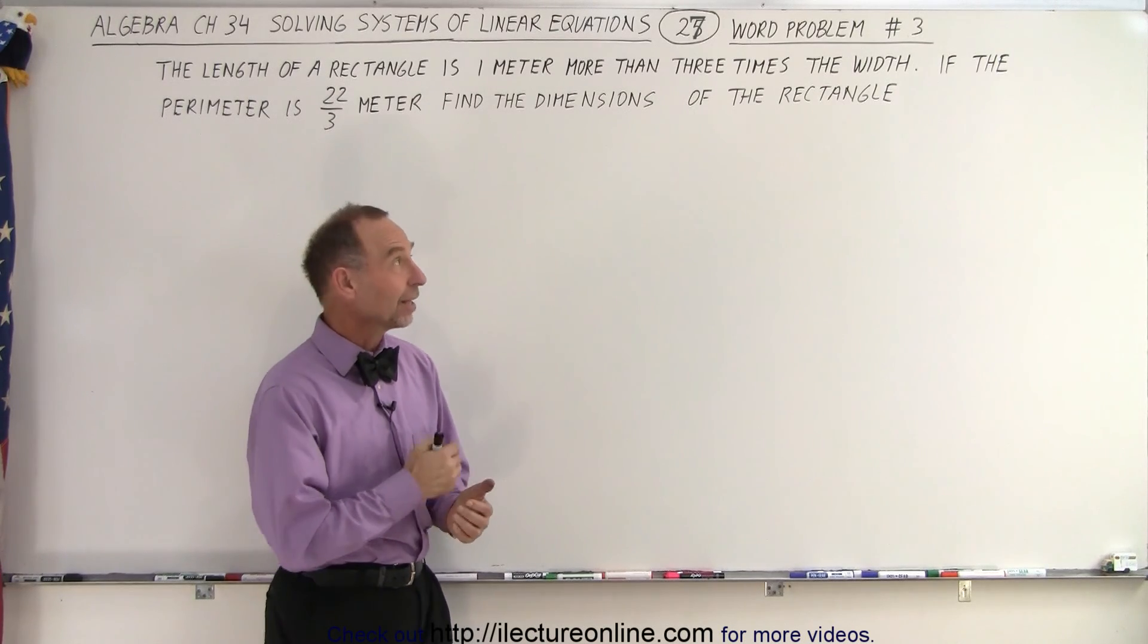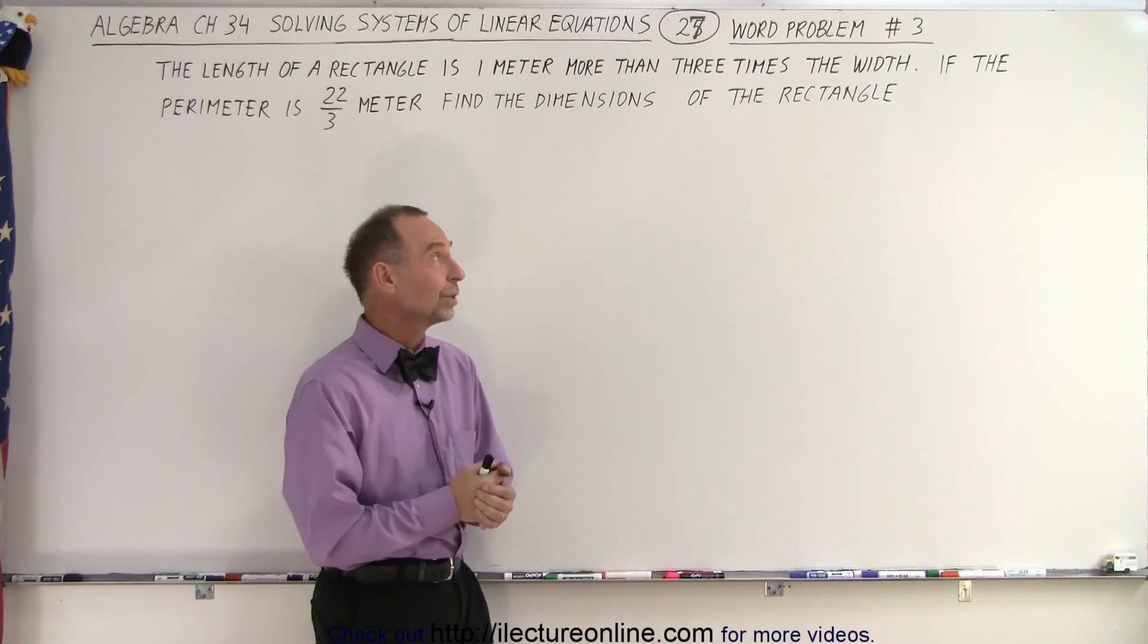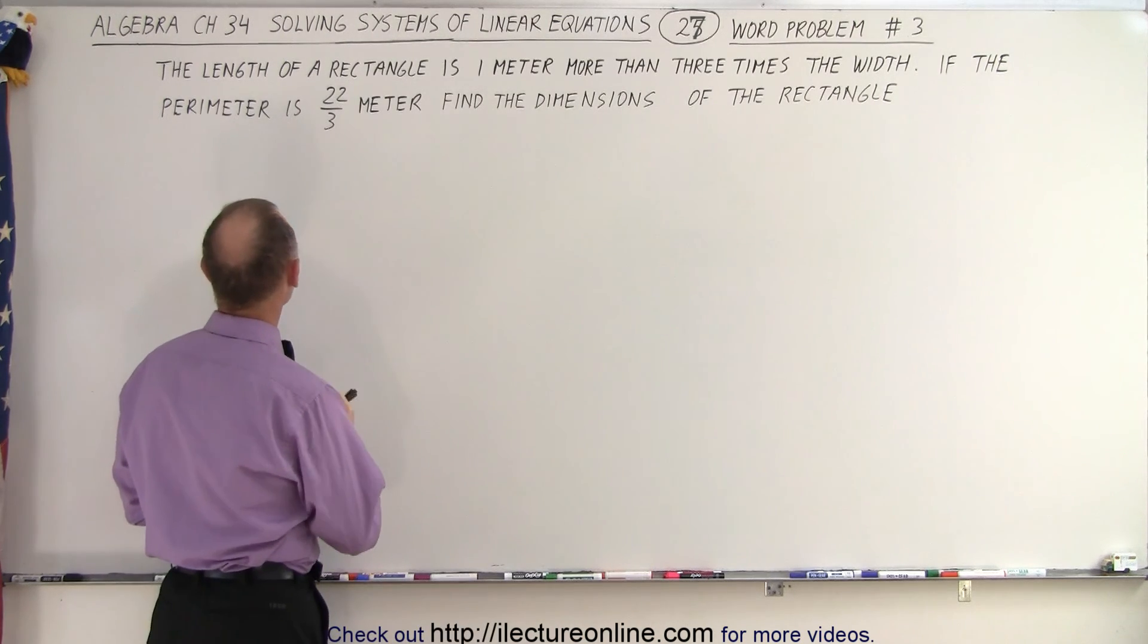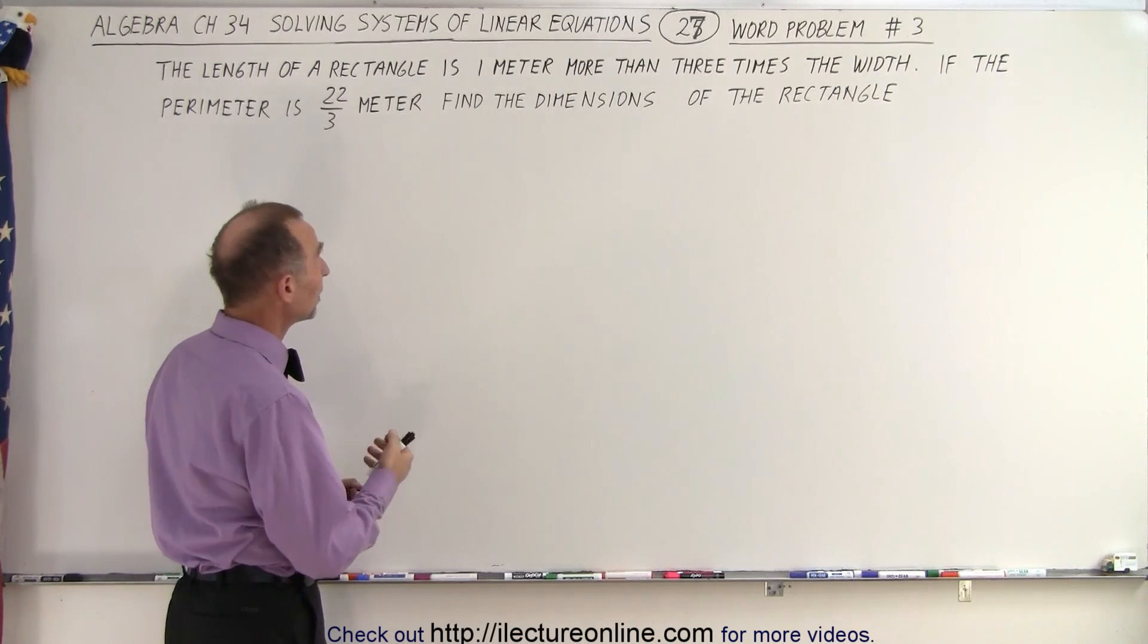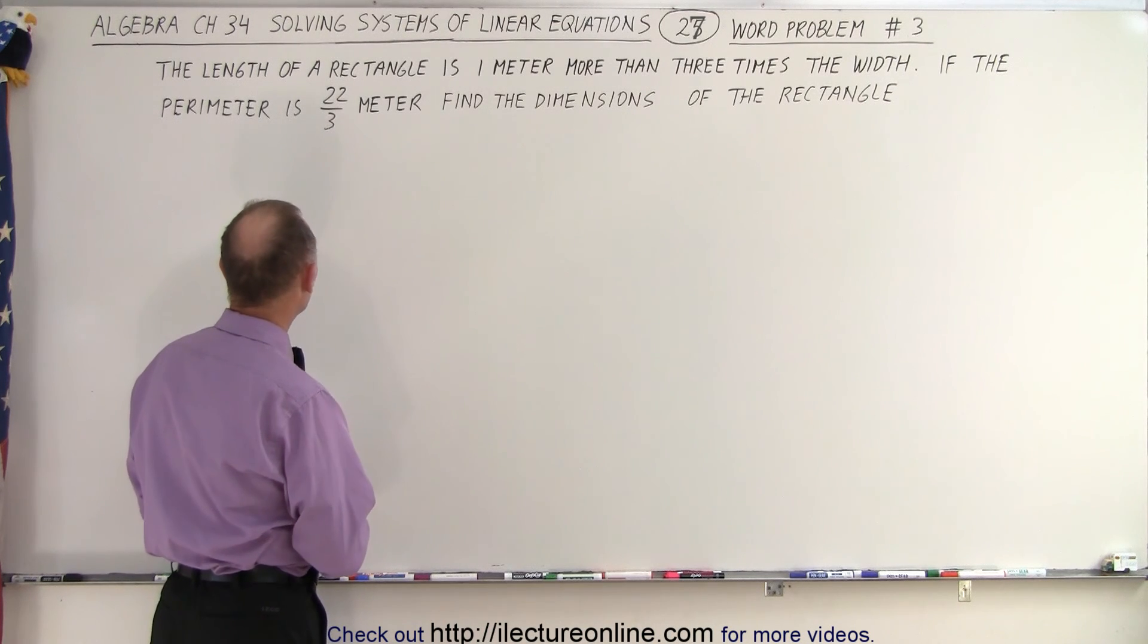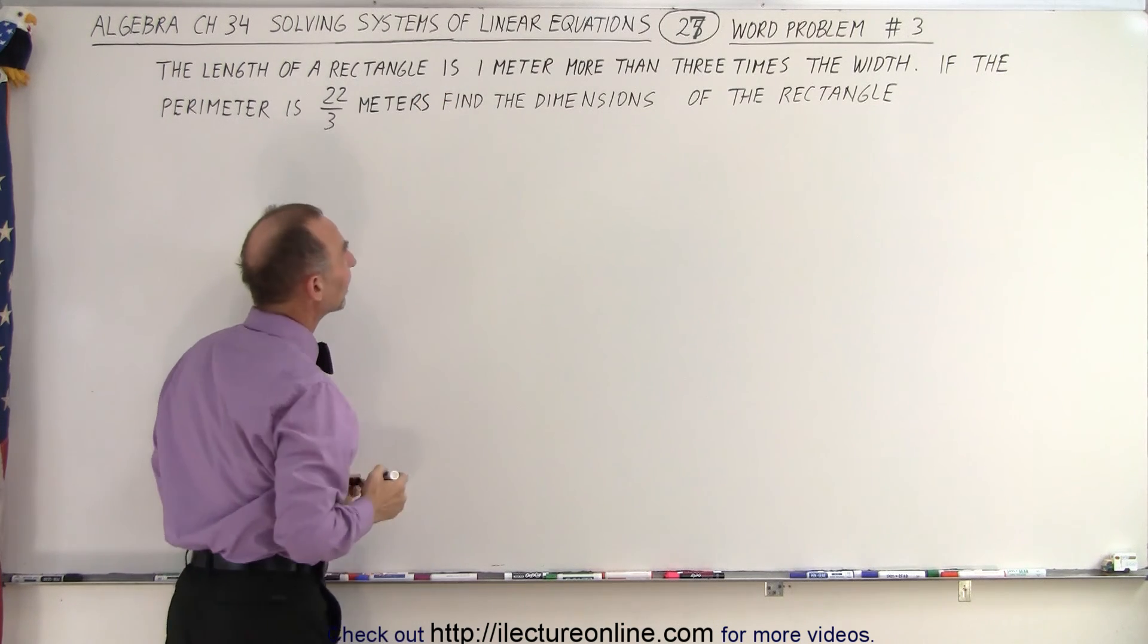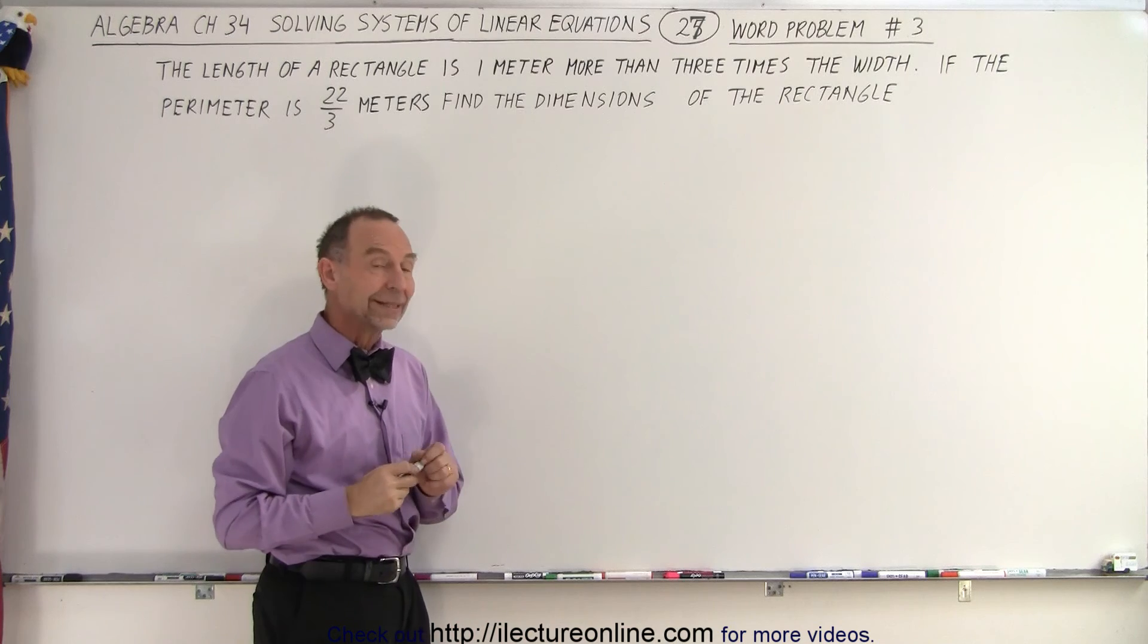Welcome to our Lecture Online. Now let's try to apply this to a geometric type of problem. We're dealing with a rectangle and we're told that the length of a rectangle is one meter more than three times the width. If the perimeter is 22 over 3 meters, find the dimensions of the rectangle.